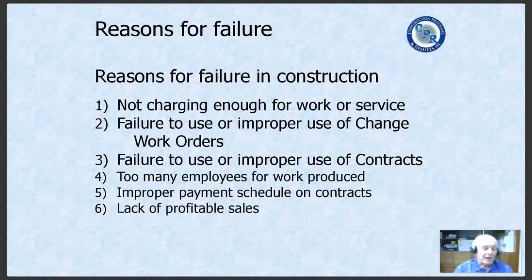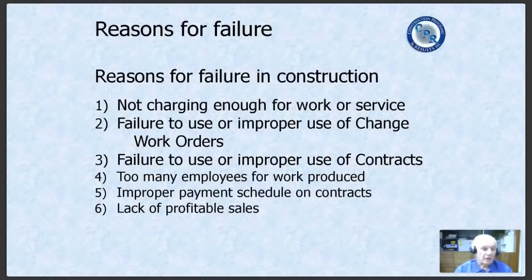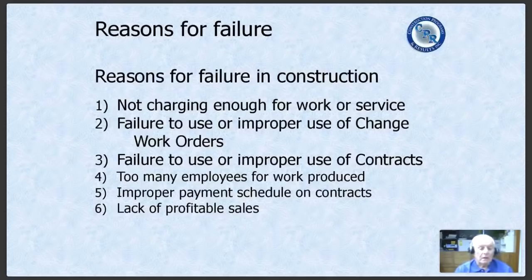Those top three will take out somewhere between 90 and 96% of all construction companies that go out of business. The fourth reason is too many employees for work produced. The fifth reason is improper payment schedule on contracts — both four and five will contribute heavily to lack of cash flow. The sixth reason is lack of profitable sales. You can set your markup and do everything right, but if you don't make enough sales, there's no money to pay the bills. Combined, these account for probably 98% of all reasons construction companies fail.